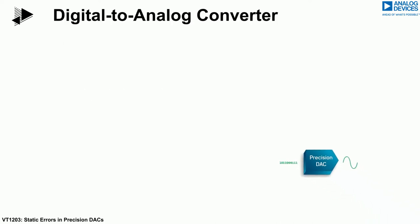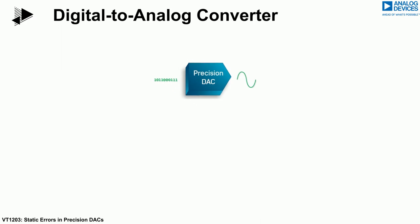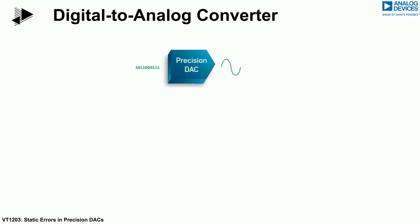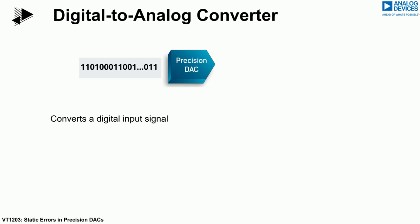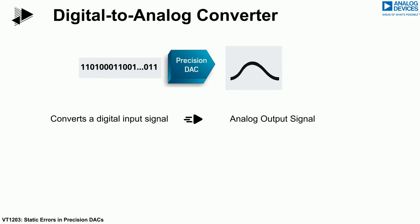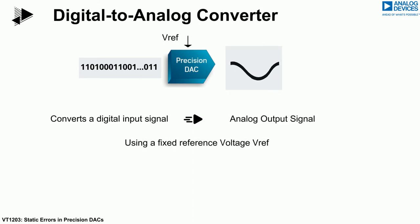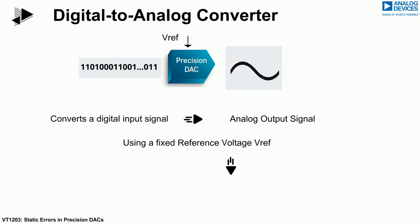Before diving into detailed specifications, we will quickly remind you what a digital-to-analog converter, or DAC, is. A DAC in its most simple form converts a digital input signal — ones and zeros — into an analog output signal. This is done with respect to a fixed reference voltage value, which determines the output range of the DAC.